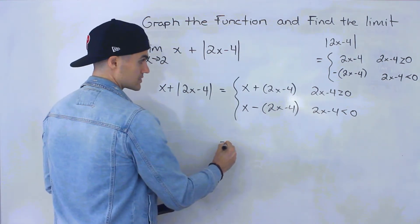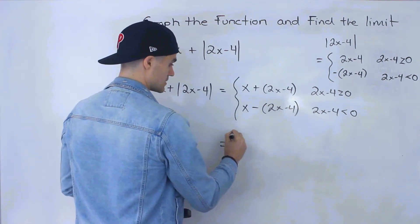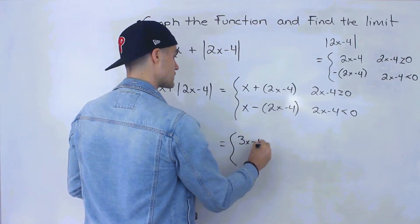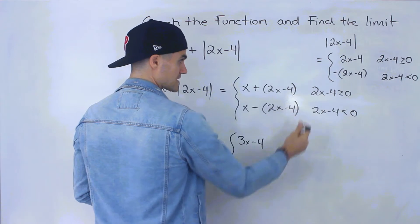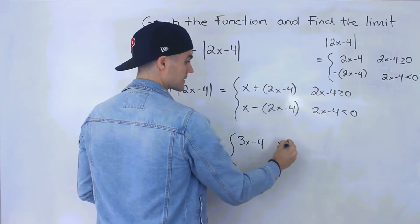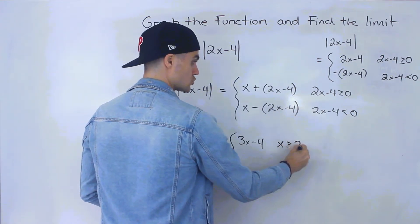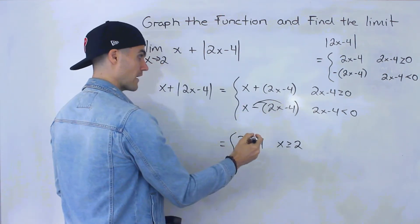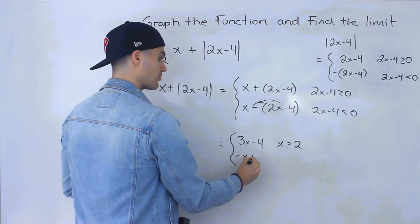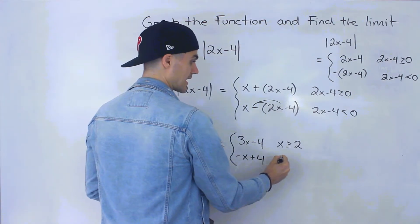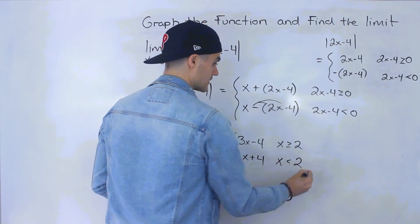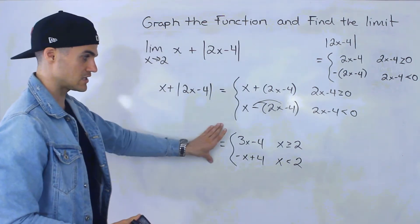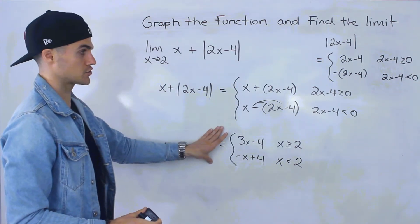Let's simplify everything. Simplifying the first piece gives us 3x minus 4, and isolating x shows that happens when x is greater than or equal to 2. For the second piece, distributing the negative inside the bracket gives us negative x plus 4, and that happens when x is less than 2.